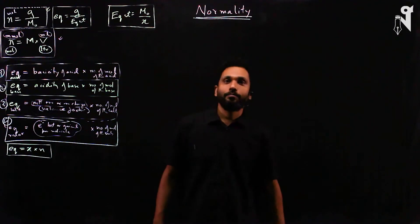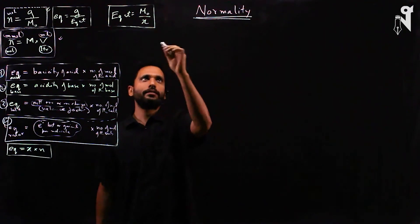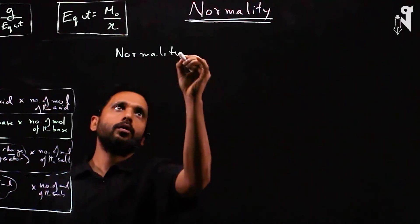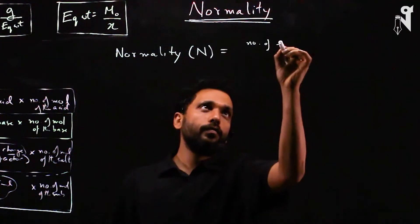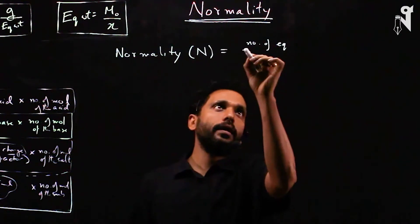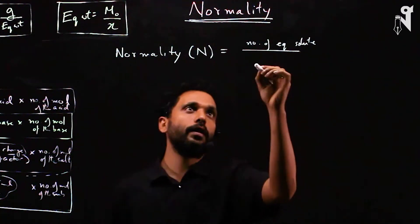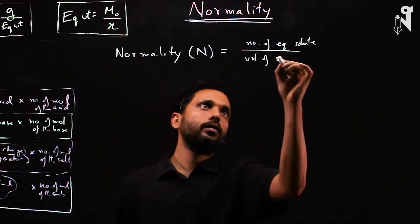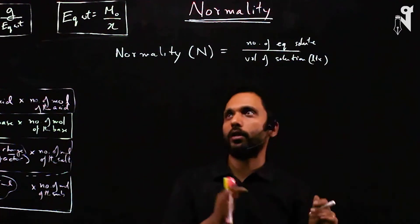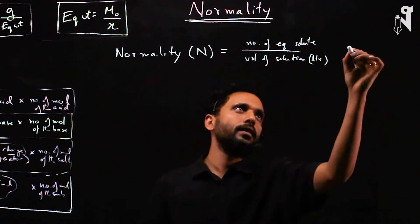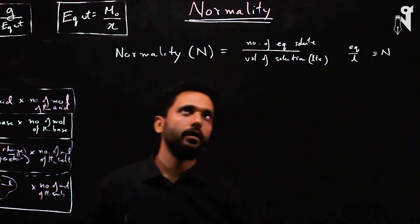Finally, normality. The definition of normality, represented by capital N, is the number of equivalents of the solute divided by the volume of solution in liters. It is very similar to molarity, but instead of number of moles, we have number of equivalents. The units are equivalents per liter, which is called 'normal.'